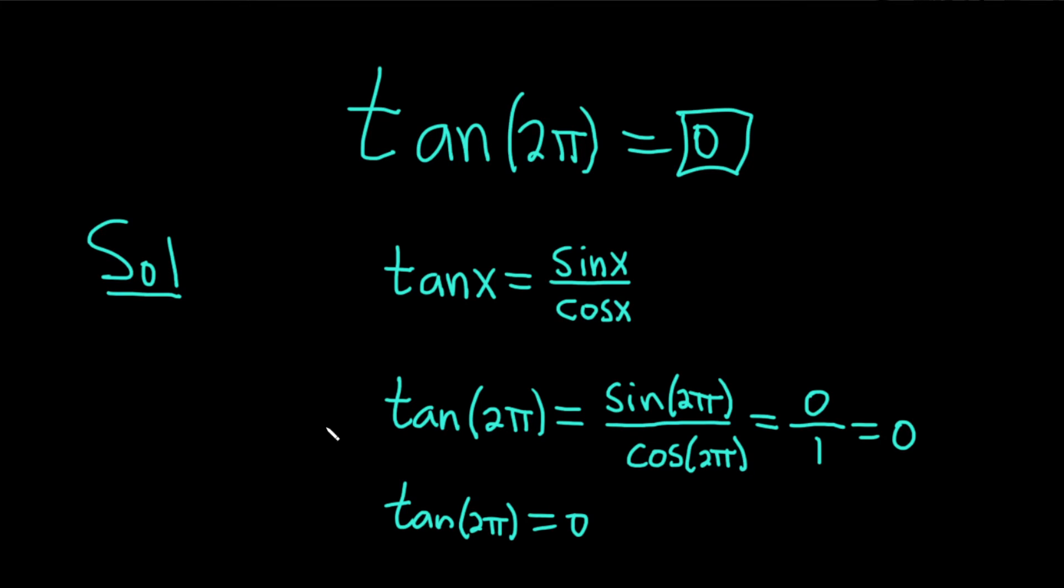So all you do is you write tangent as sine over cosine and then you just plug in 2π. Sine of 2π is 0, cosine of 2π is 1. You get 0 over 1 which is 0. So the tangent of 2π is equal to 0.